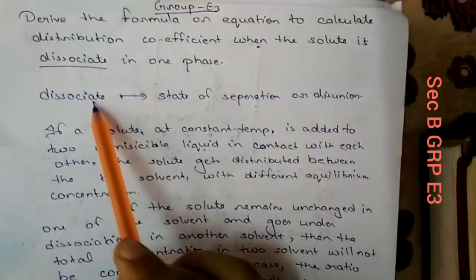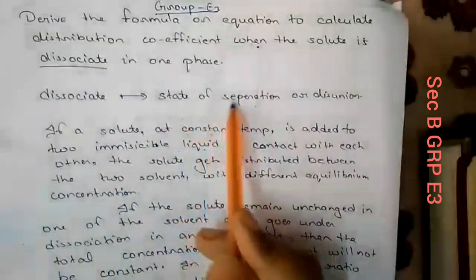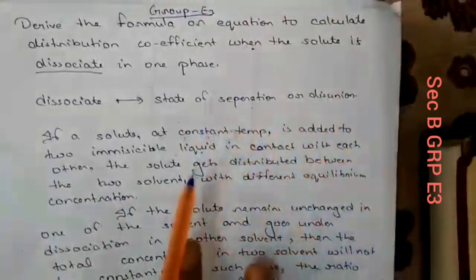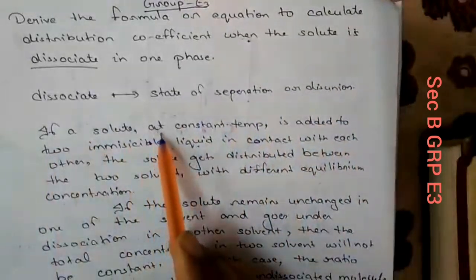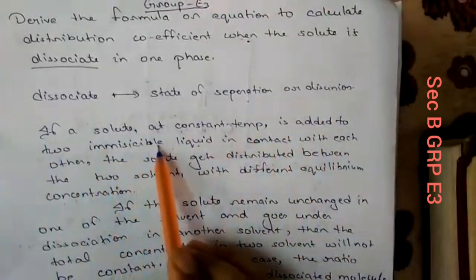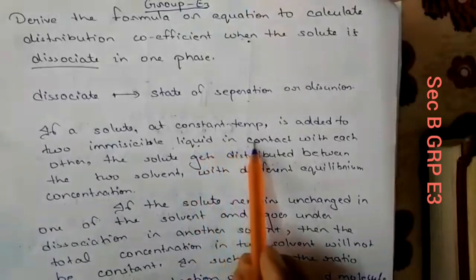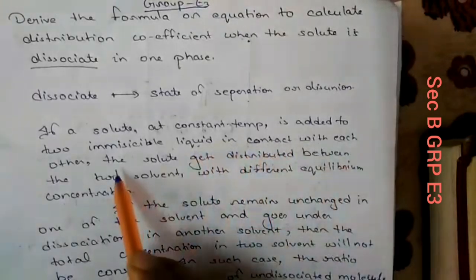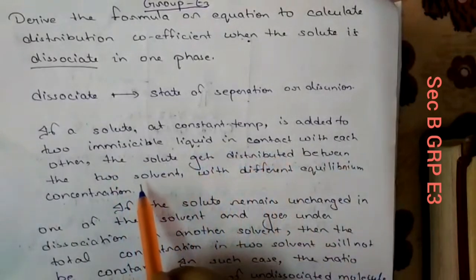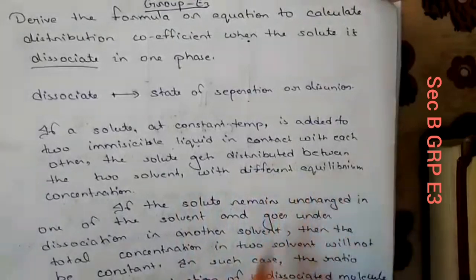First, let us understand the meaning of dissociate. The word dissociate stands for a state of separation. That is, when a solute at constant temperature is added to two immiscible liquids or solvents which are in contact with each other, the solute gets distributed between the two solvents with different equilibrium concentrations.